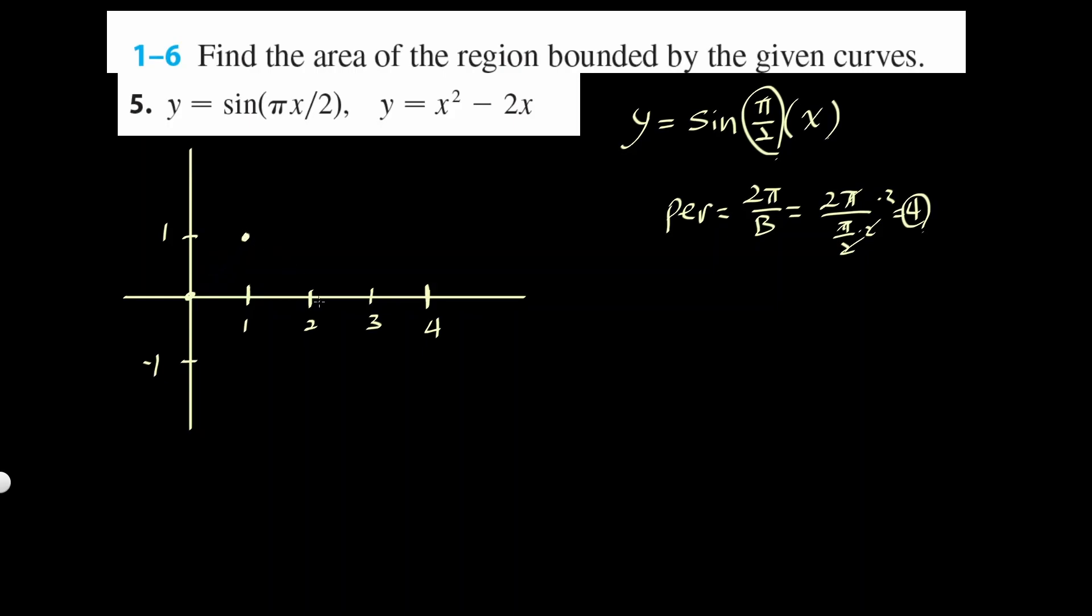So sine goes up, comes back down. This is just graphing sine. So it's going to look something like this. I'm just going to draw one period, see what happens. Then I'm going to change my color.